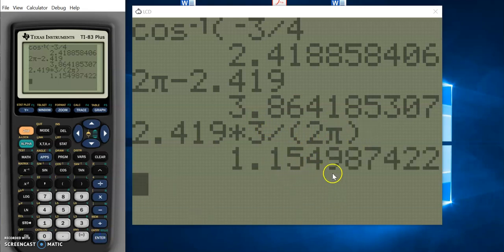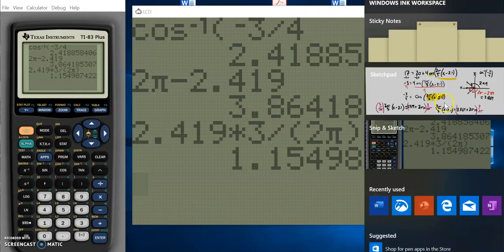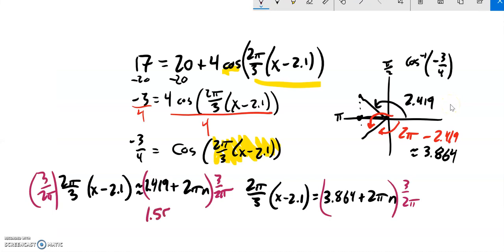So I get about 1.55 plus, the 2πs cancel here, 3n. If I do it here with a 3.864, again the 2πs cancel out leaving me 3n.